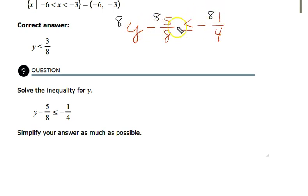So this then becomes 8y. Here the 8s cancel out, so this is now negative 5. And here, 4 will go into there once, 4 will go into there twice. So this is now negative 2. Now we want to take this negative 5 and bring it over to the other side to isolate the 8y.